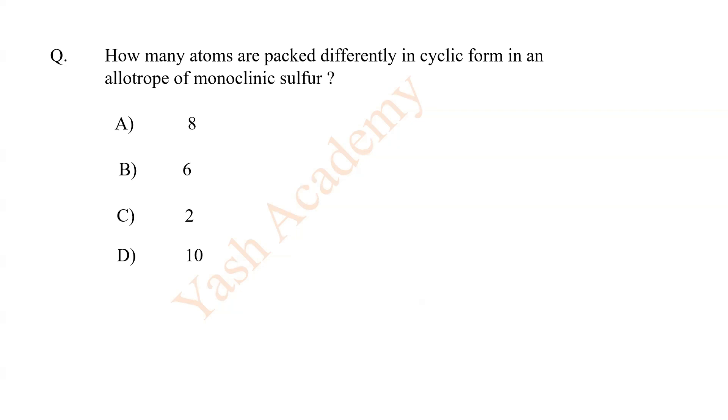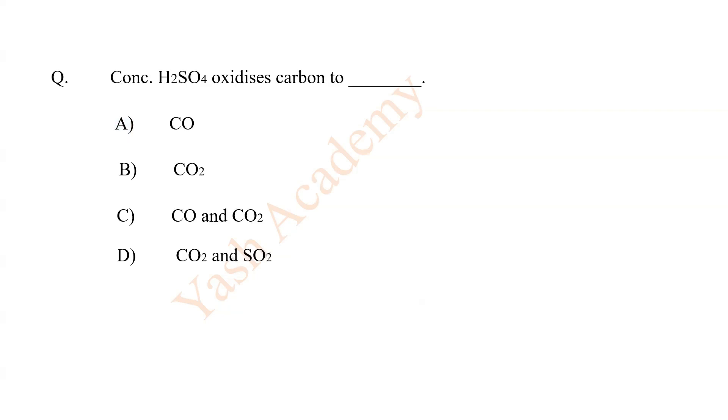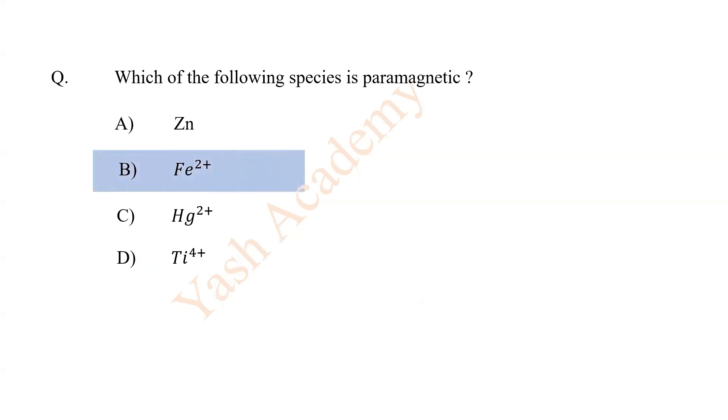How many atoms are packed differently in cyclic form in an allotrope of monoclinic sulfur? A, 8. Concentrated H2SO4 oxidizes carbon to D, carbon dioxide and sulfur dioxide. Which of the following species is paramagnetic? B, Fe 2 plus ion.